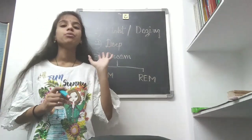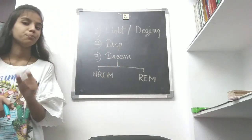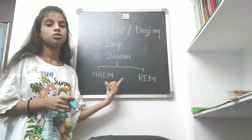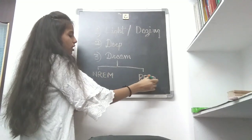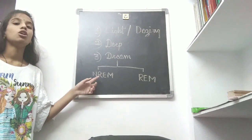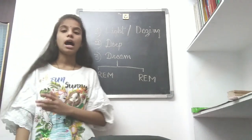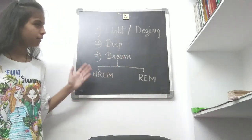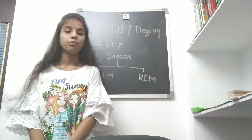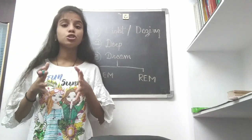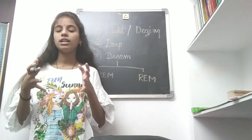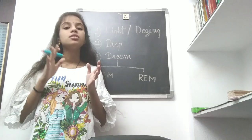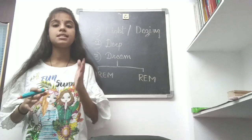Scientists classify sleep into two broad types: NREM and REM. NREM stands for non-rapid eye movement, and REM stands for rapid eye movement. In non-rapid eye movement, NREM, the brain slows down its activity and your body rests. This is called the deep sleep stage.